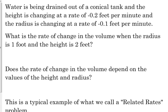This is a problem that you may be presented with. Water is being drained out of a conical tank. The height is changing at a rate of negative 0.2 feet per minute. It's negative because the water is draining out, so the height is decreasing in the cone. And the radius is changing at a rate of negative 0.1 feet per minute.